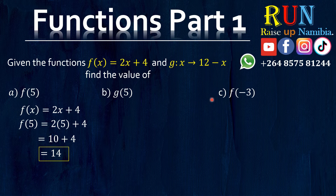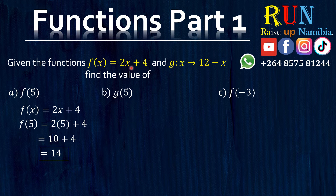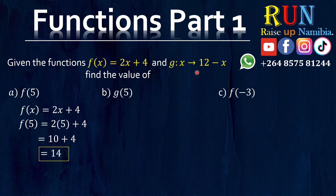So I give you a chance to do B and C. Now for B and C, let's start with B. Here you have a G and then inside brackets you have a 5. Now again, when you look at these two functions, which one is having a G? It's this one. Now we don't read this function the same way we read this one. We read this one as F of X equals to 2X plus 4, but this one we read it as G is a function that maps X onto 12 minus X.